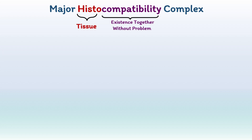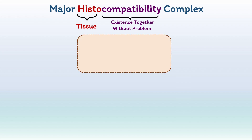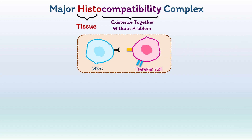Major Histocompatibility Complex proteins are found in all higher vertebrates. Their function is that they recognize the foreign body or antigen and display them on the cell surface for recognition by the appropriate immune cell. Major Histocompatibility Complex causes interaction of white blood cells or leukocytes with immune cells or other body cells.